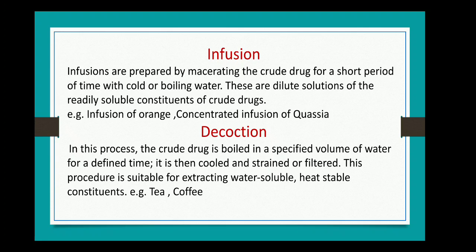Next, coming to decoction: in decoction, the drug is boiled with water for a stated period, usually 10 minutes. After boiling, the liquid is strained and water is passed through the contents to make the required volume. This process is chosen for vegetable drugs of hard and woody nature and for thermostable, water-soluble phytoconstituents. Examples of decoction are tea or coffee.